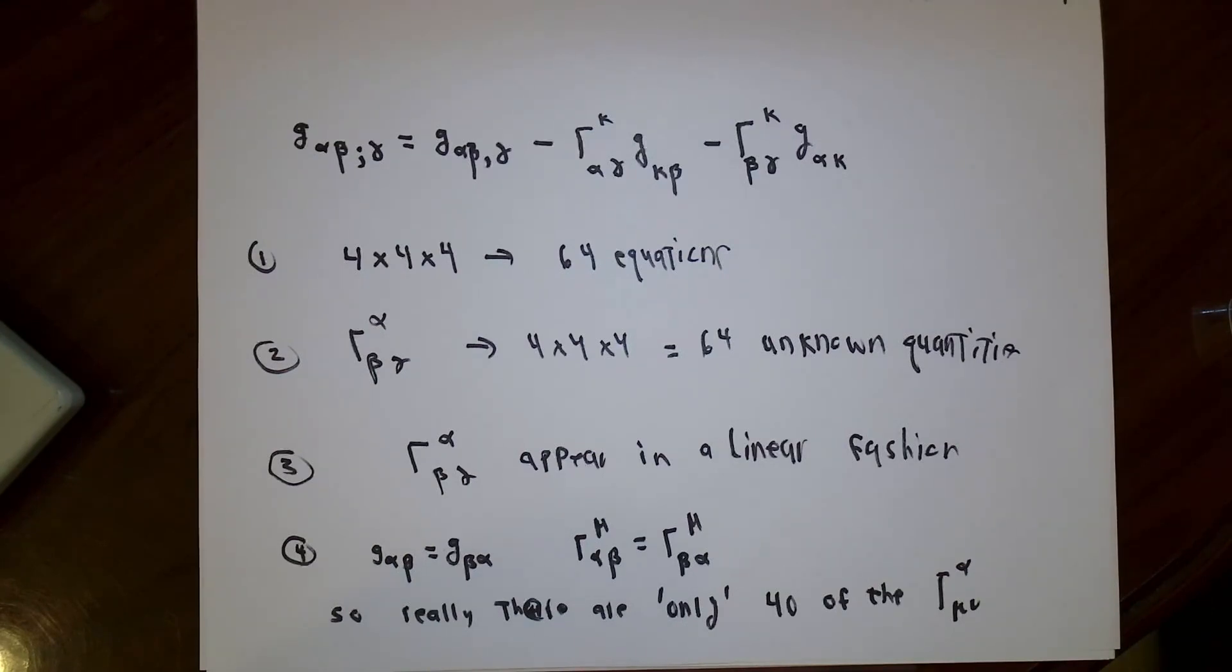These equations are very complicated looking, but they're not as bad as it could be. If I think of these as equations where the Christoffel symbols are the things that I don't know, these are linear equations. There's no square of a Christoffel symbol, or derivative of a Christoffel, or anything like that.